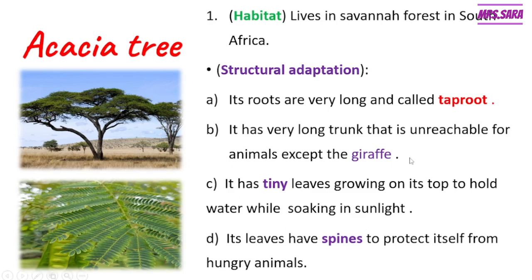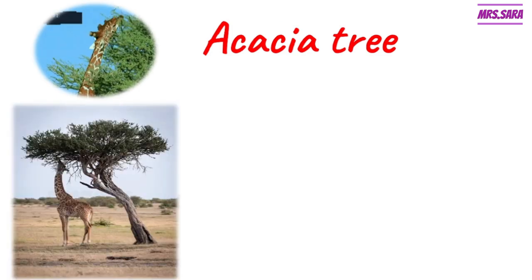So the structural adaptation of acacia tree: the roots are called tap roots and are very long; the trunk is very long to make it unreachable for animals except the giraffe; it has tiny leaves growing on the top to hold water while soaking in the sunlight; and the leaves have spines to protect itself from hungry animals.